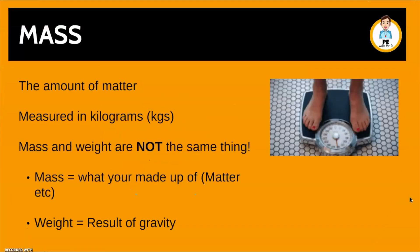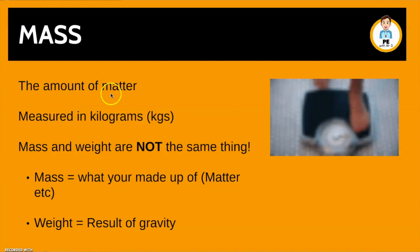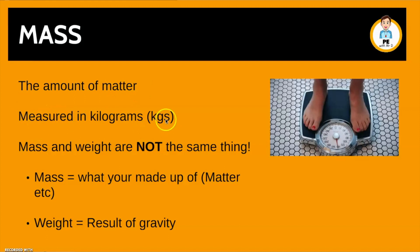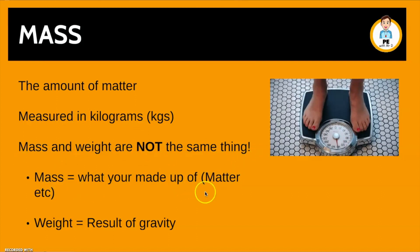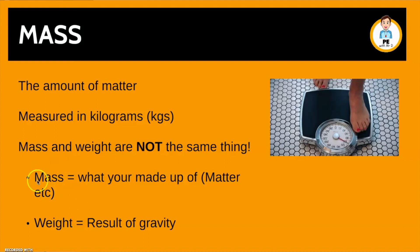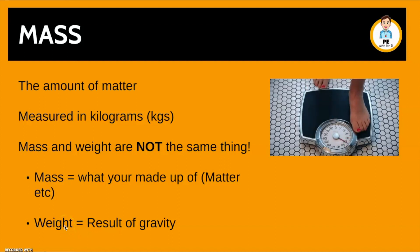Next we have mass. This is simply the amount of matter, measured in kilograms. Interestingly, mass and weight are not the same thing — this is a common misconception. Mass is what you are made up of, your matter. Weight is the result of gravity. So if you were on the moon, your mass would be exactly the same because you are still made of the same stuff. However, your weight would be completely different — in fact you would weigh nothing because there is no gravity in space.